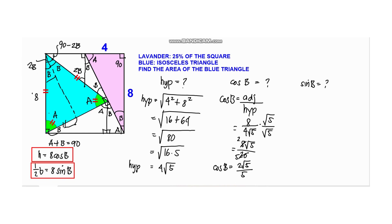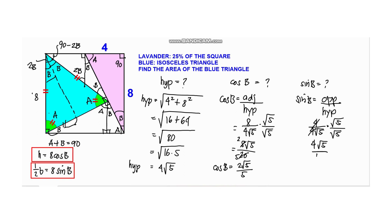For the sine of B, that equals opposite over hypotenuse. The opposite side is 4, over 4 square root of 5. We can cancel the 4, and rationalizing gives us square root of 5 over 5. This is sine of angle B.